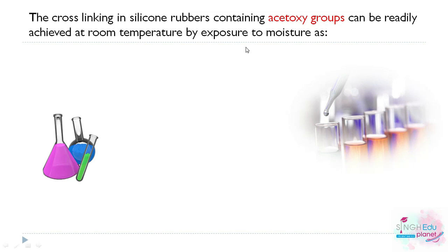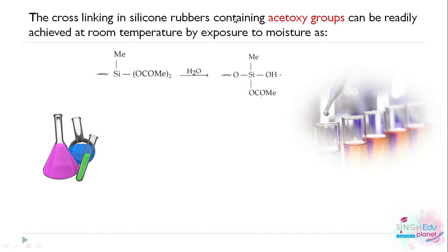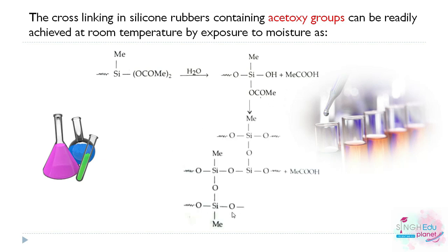Cross-linking in silicon rubbers containing acetoxy groups (CH₃COO-) can be achieved at room temperature by exposure to moisture. Hydrolysis of the acetoxy groups occurs, and the resulting silanol groups condense to form the cross-linked product, which has four silicon groups with directed methyl groups.